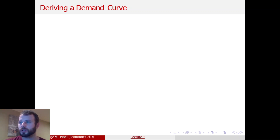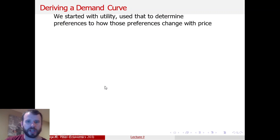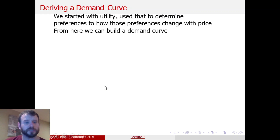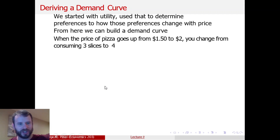From there you derive the demand curve. We started with utility, used that to determine preferences and how those preferences change with price, and from there we're able to build a demand curve. This is why I had pizza and not-pizza — that was intentional. If you consider everything that's not pizza as one good and everything that's pizza as the other, that's just for the sake of having a two-dimensional graph. In real economics we'd have whatever goods are really relevant, or maybe cash as a substitute good.